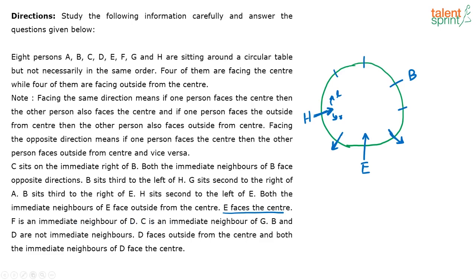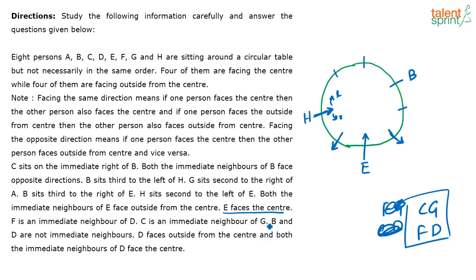C is an immediate neighbor of G. So C and G have to be immediate neighbors, and F and D have to be immediate neighbors. The two adjacent empty spaces available mean either C and G or F and D fill each pair of spots. That leaves only one remaining place, which must be filled by A — since E, H, B are placed, and C, G and F, D will fill the other four spaces.